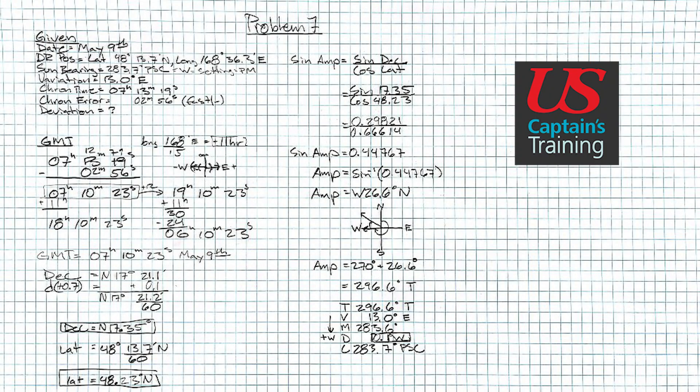Hey, Neil Smith here with U.S. Captains Training. We are looking at a solution to practice problem 7 in our amplitude set. This is a good problem to just try on your own with no references. The GMT, when we calculate that, we stay in the AM side of the chronometer. Our GMT lands in the same day as the date we took the bearing. So it keeps this problem very straightforward. This is a good one to just try on your own with no references. Let's get started.